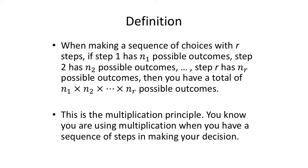But when you're making a sequence of choices with R steps, if step one has n sub one possible outcome, step two has two possible outcomes, step R has n sub r possible outcomes, then you'll multiply to get your total possible outcomes.